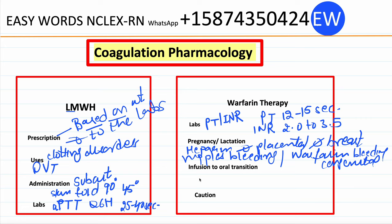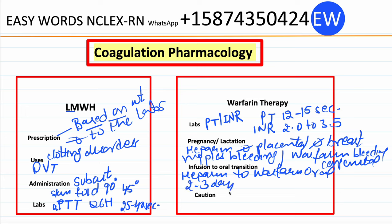IV to oral transition: once the client is stable, the physician may decide to change from IV heparin to oral warfarin. When switching, both drugs should be given simultaneously for at least two to three days, because the half-life of heparin is 90 minutes while the half-life of warfarin is three to four days.